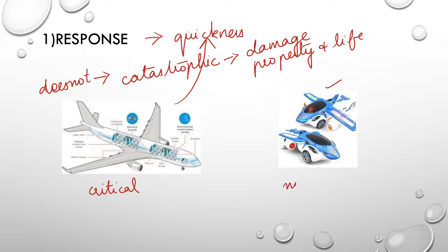The response should be very quick. Now let us take the toy car — this is a non-critical system. Even here, if the response is late, it is not going to cause any catastrophic effect because this is just a toy car.